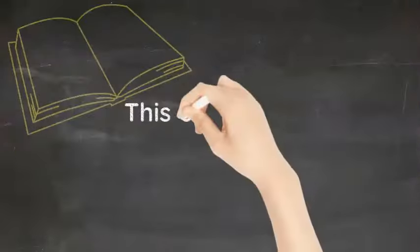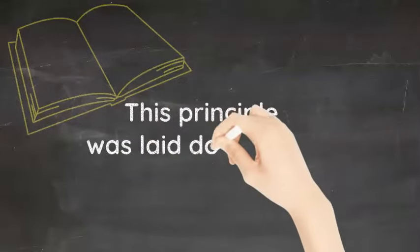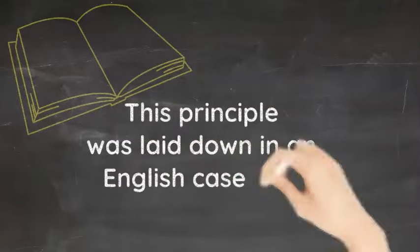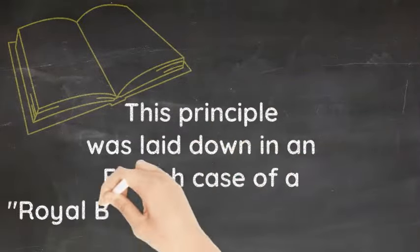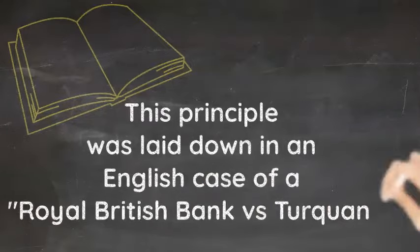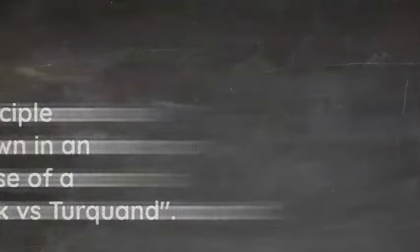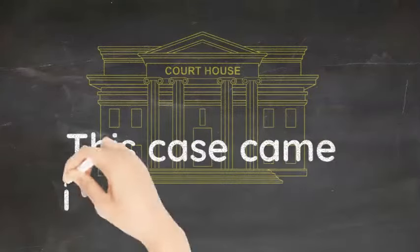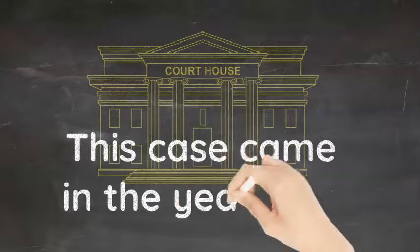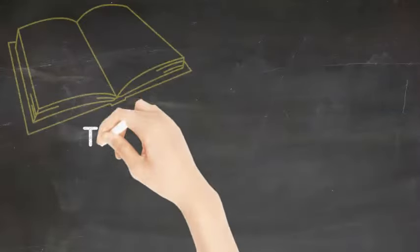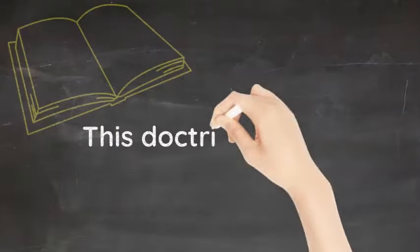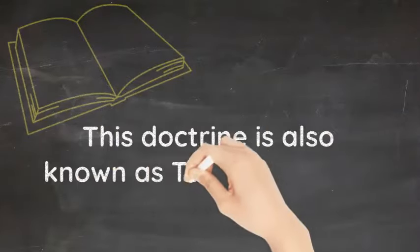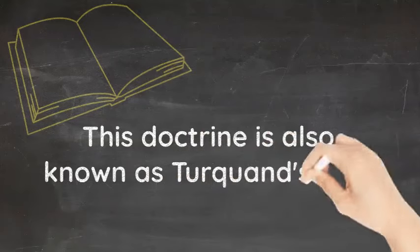This principle was laid down in an English case of Royal British Bank versus Turquand. This case came in the year 1856. This doctrine is also known as Turquand's rule.